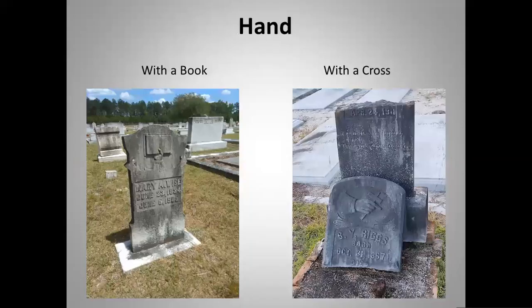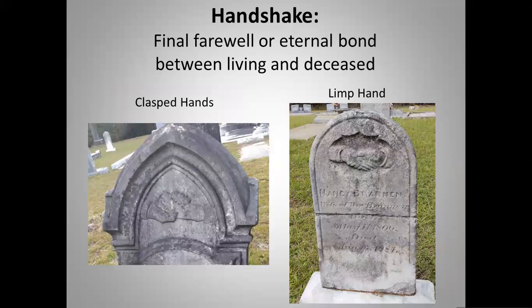You can also find a hand holding a book or likely a Bible, and a hand with a cross. Handshakes must be looked at closely because their different positions have different meanings. Typically they mean a final farewell or an eternal bond between the living and deceased. If the hands are clasped with fingers interlocking, that means a final farewell. If one hand is limp with straight fingers while the other holds it, that represents the eternal bond — the closed hand is the deceased and the open hand is the living person.